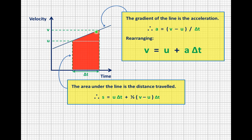And then we add the triangle to the top, half base times height. So the half is here, the base of the triangle again is delta t, and the height of the triangle again is v minus u. So we end up with this.